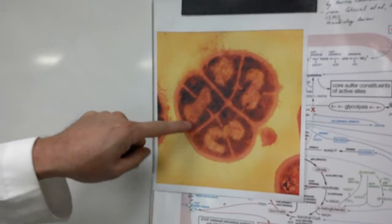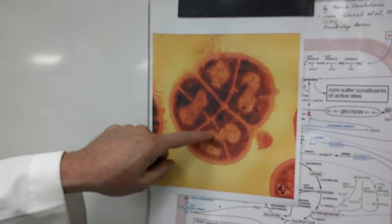These light-staining regions are the genomes, that's where the DNA is, and here the genome is dividing.